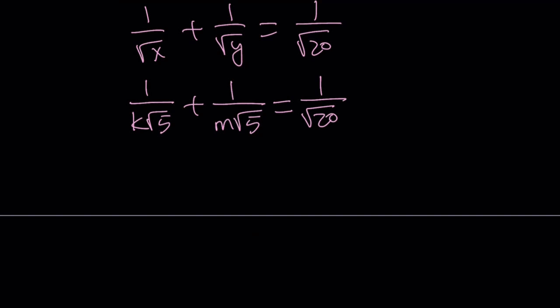We can take out 1 over square root of 5. That's going to give me 1 over k plus 1 over m. And here, I can write this as 1 over square root of 5 times 1 over 2, because square root of 20 can be written as square root of 4 times square root of 5.